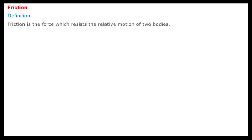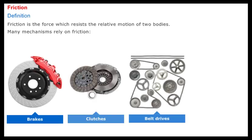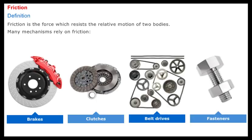Friction can be defined as the force resisting the relative motion of two bodies. Many parts of a machine actually rely on friction for their operation, for example, brakes, clutches, belt drives, and even fasteners such as the nuts and bolts which hold the machine together. In many other machinery parts, however, friction is undesirable since it can create heat, wear, and increased energy consumption.